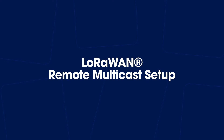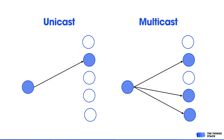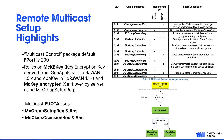LoRaWAN multicast setup is a specification designed to address the need for multicast. In the normal scenario of a class A device, it's unicast. In multicast, one device is sending to several other devices — in this case, the application server sending multiple commands to multiple nodes. The default multicast control package field port is 200. It relies heavily on the multicast key encryption key, which is derived from the GenAppKey in LoRaWAN 1.0 and AppKey in LoRaWAN 1.1.